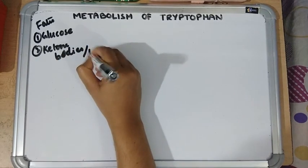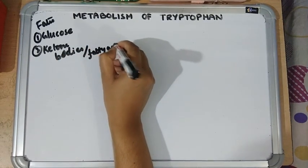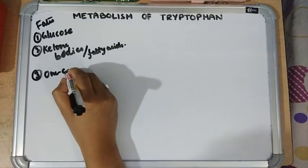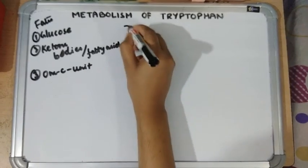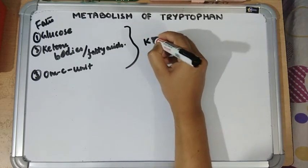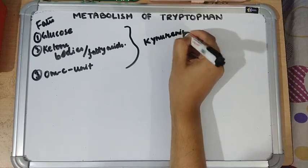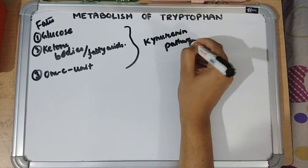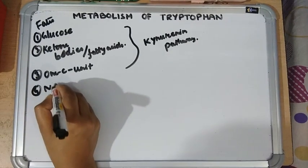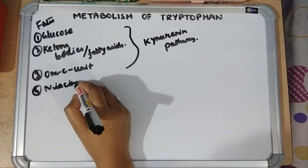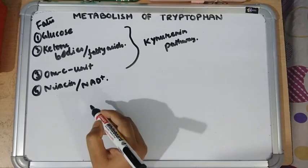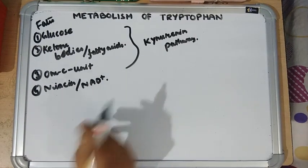It also forms acetyl coenzyme A, fatty acids, and one-carbon units. It forms these three compounds by the pathway known as the kynurenine pathway. A diversion of this pathway forms niacin or nicotinic acid or vitamin B3, and it forms NAD+, the coenzyme form.